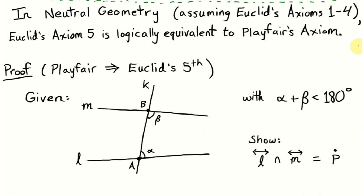We would like to prove that these two axioms are equivalent. What that means is, if we assume the first four axioms of Euclid, then given Euclid's fifth axiom, we could prove Playfair's axiom, or alternatively, if we assume Playfair's axiom, we could prove that Euclid's fifth axiom follows.